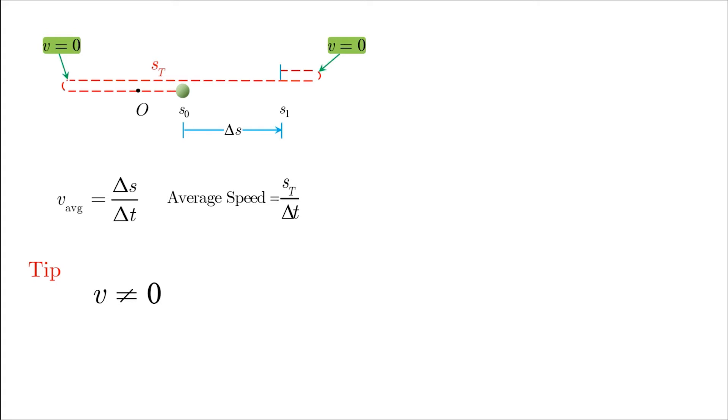If v is not equal to zero during that time, then we don't have any turning points, which means there is no change in the direction of motion and the particle moves from start to finish in only one direction. In this case, the displacement is equal to the distance traveled.